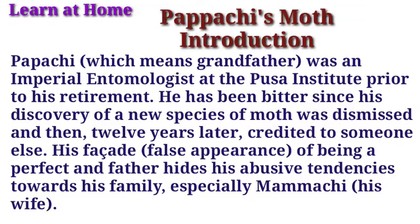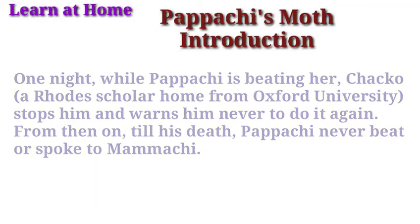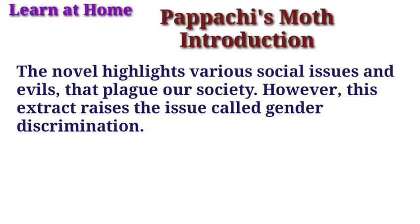One night, while Papachi is beating her, Chako, a Rhodes scholar home from Oxford University, stops him and warns him never to do it again. From then on till his death, Papachi never beat or spoke to Mamachi. The novel highlights various social issues and evils that plague our society; however, this extract raises the issue of gender discrimination.